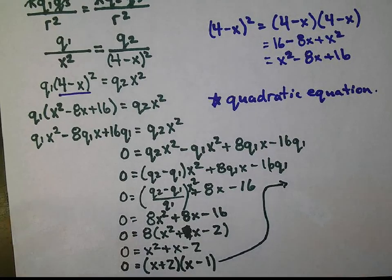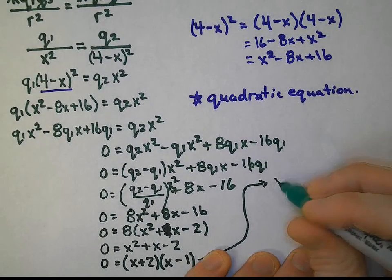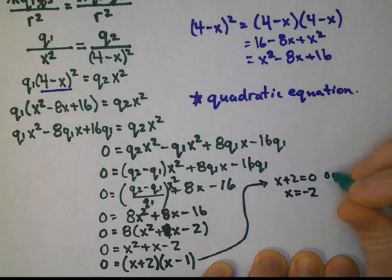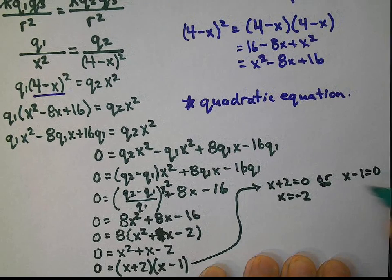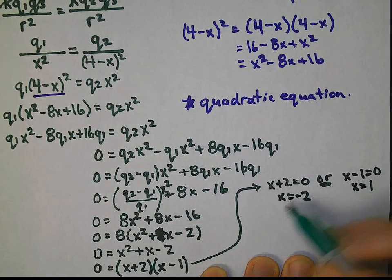We can now solve each factor separately. We have x plus 2 is equal to 0, which tells us that x equals negative 2, or x minus 1 is equal to 0, so x equals 1. We can never have this negative guy here. It's inadmissible.